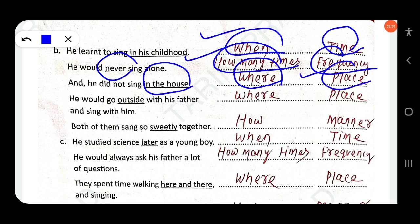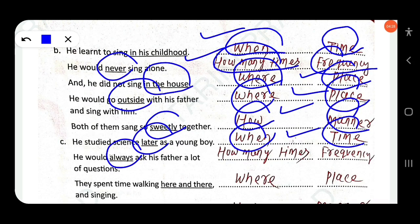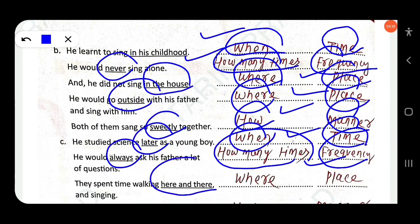'He would go outside with his father and sing with him' — 'outside' is adverb of place. 'Both of them sang so sweetly together' — 'sweetly' is adverb of manner (how). 'He studied science later as a young boy' — 'later' is adverb of time (when). 'He would always ask his father a lot of questions' — 'always' is adverb of frequency. 'They spent time working here and there' — adverb of place.